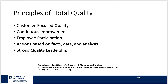Total quality management was pretty hot back then. From the General Accounting Office of the U.S., the principles of total quality they identify are: customer focus quality, continuous improvement, employee participation, actions based on facts, data, and analysis as opposed to just off the top of your head, and strong quality leadership. All of these are important — they're equally important. Customer focus quality and strong quality leadership tend to lead in polls about which one is most important.